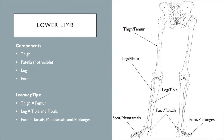The lower limb parallels the upper limb in structure. The femur corresponds to the humerus; the tibia and fibula correspond to the radius and ulna; and the foot has tarsal bones instead of carpals, metatarsals instead of metacarpals, and phalanges in both. The region where the femur is called the thigh, the tibia and fibula region is called the leg, and the distal region is the foot.